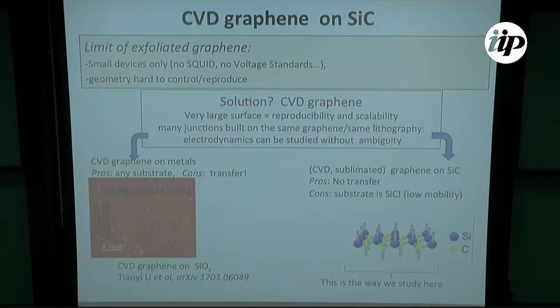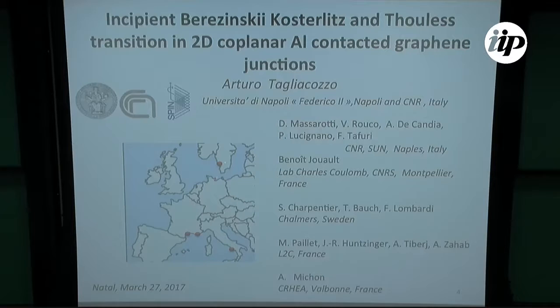Apparently, this way of growing graphene with chemical vapor deposition is being done also in Cambridge, but again, the graphene is transferred on top of some silicon oxide. This is work done by many collaborators. Graphene is prepared in Narbonne, and then it is characterized in Montpellier, and contacts have been put in Chalmers, and the devices have been measured in Naples. The people that mostly contributed to this is Benoit Roubeau and also David Massarotti in Naples.